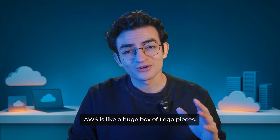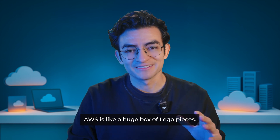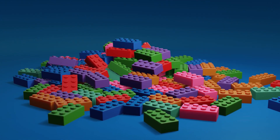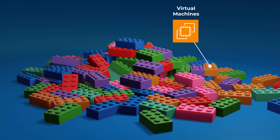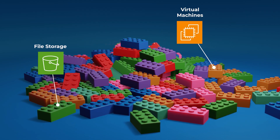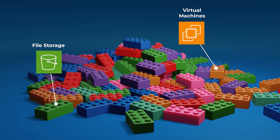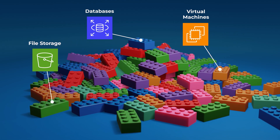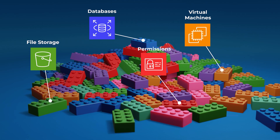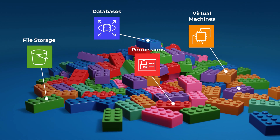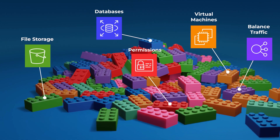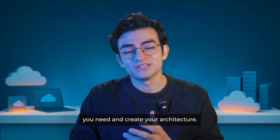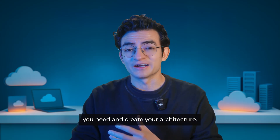AWS is like a huge box of Lego pieces where each Lego block is a service. This block runs virtual machines. This one stores files. Another one manages databases. This one takes care of user permissions. And this one balances traffic. You choose the blocks you need and create your architecture.